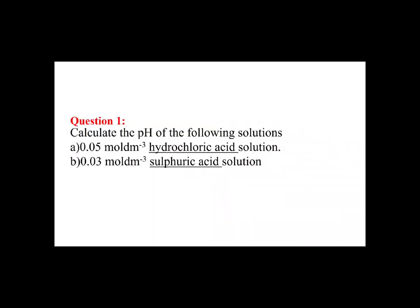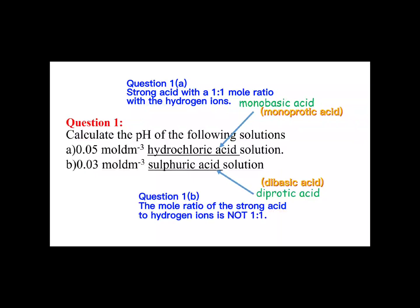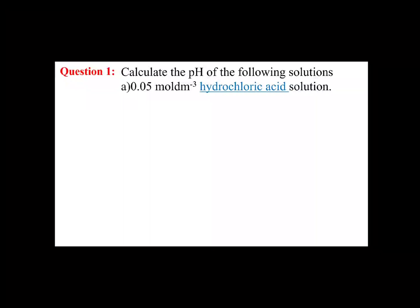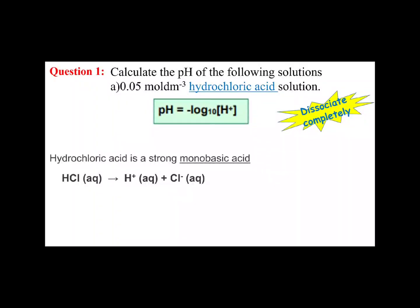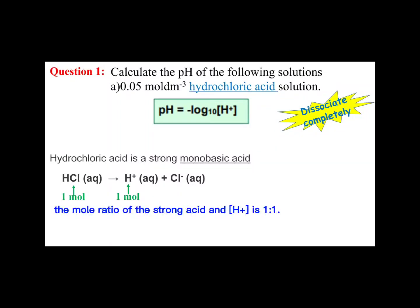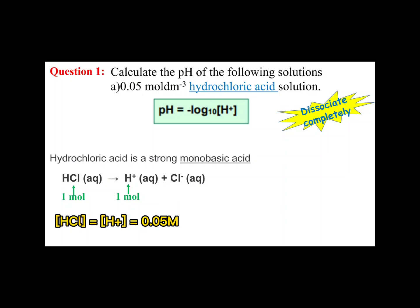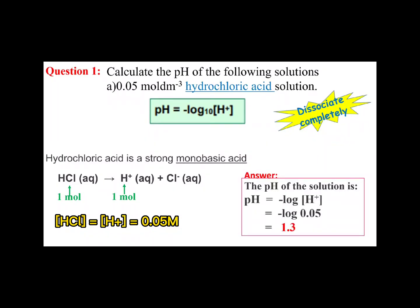Next, we will look at Question 1, where the concentration of strong acid is given, and we will work through how to calculate the pH for these strong acids. To answer Question 1a, we need to use this formula. Since hydrochloric acid is a strong monobasic acid and it dissociates completely in solution, the mole ratio of the strong acid to the concentration of hydrogen ions is 1 to 1. From the question, the concentration of hydrochloric acid solution is 0.05 mol/L. Therefore, the concentration of hydrogen ions in the solution is also 0.05 mol/L. Now that the concentration of hydrogen ions has been identified, we just plug it into the pH formula. Therefore, the pH of 0.05 mol/L hydrochloric acid is 1.3.